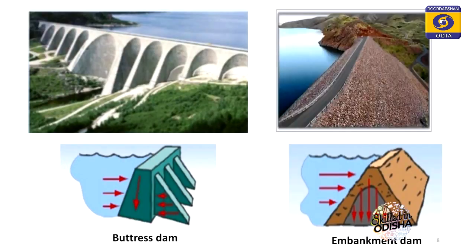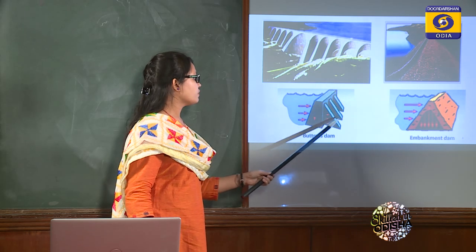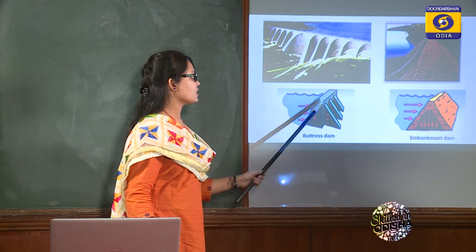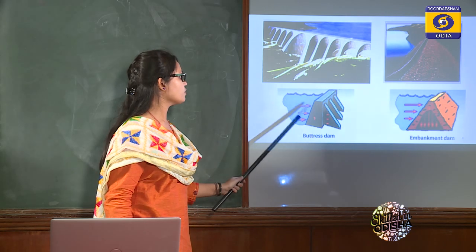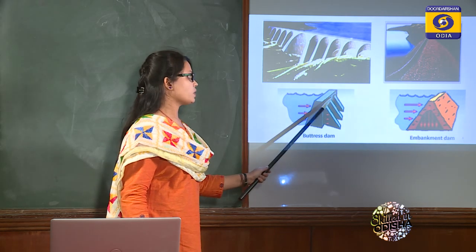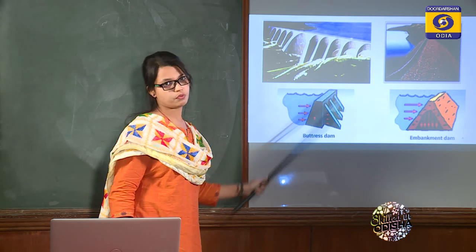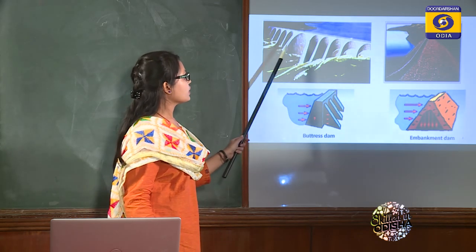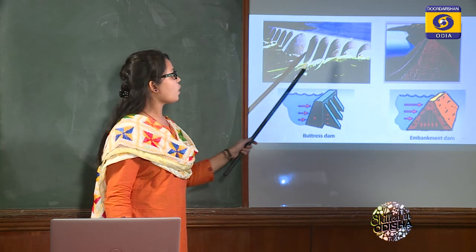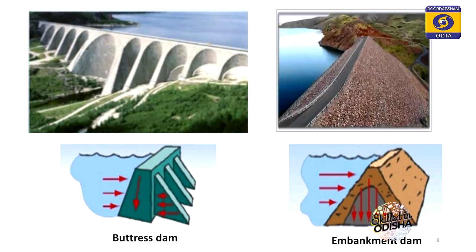A buttress dam has a slanting slab on the upstream side, supported by triangular reinforced concrete walls called buttresses. These buttresses resist the external forces. It is otherwise called a hollow gravity dam because less construction material is used compared to gravity and other dams.